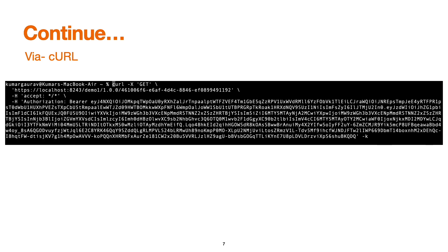In certain environments where we don't have access to a graphical user interface — since Postman requires a GUI — we can test the API via curl. Curl is a command-line utility available on most Windows, Linux, and Unix-based systems, and we can use it to test our API.